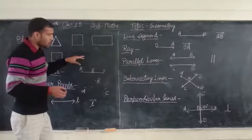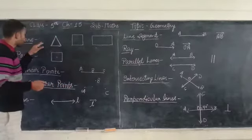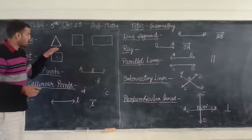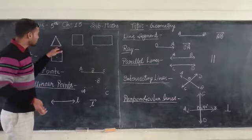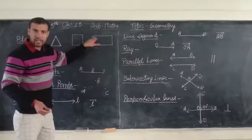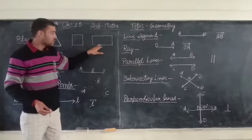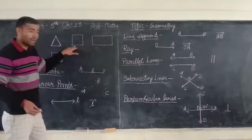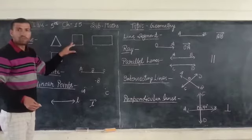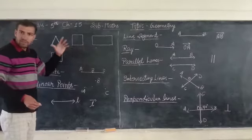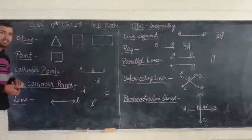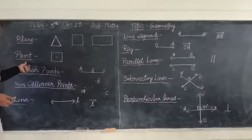I will talk about some points of the plane. Triangle, square, and rectangle — these are the flat figures of the plane. Next point: Second — Point.